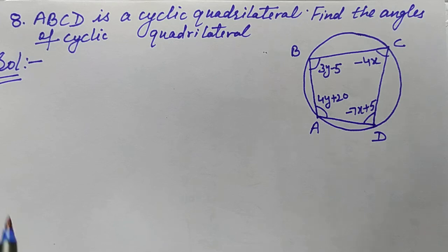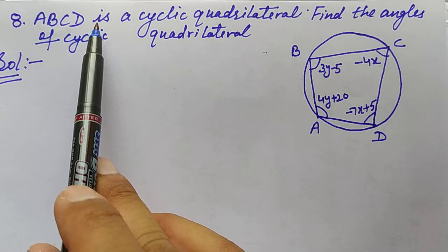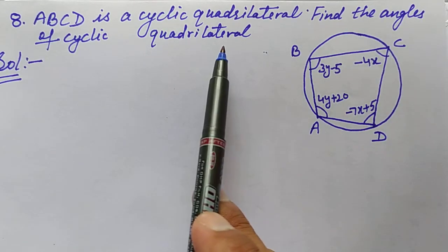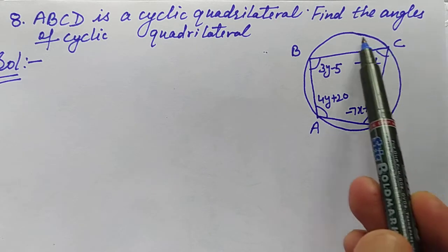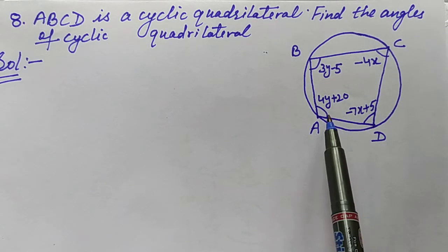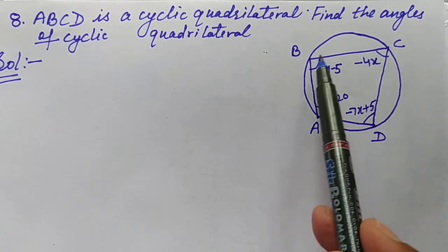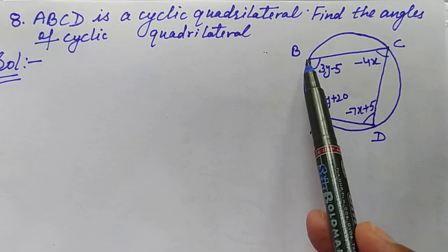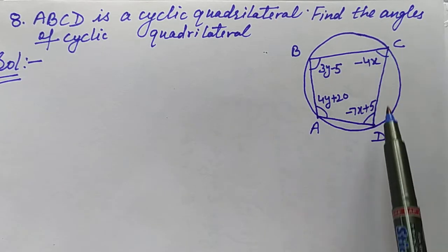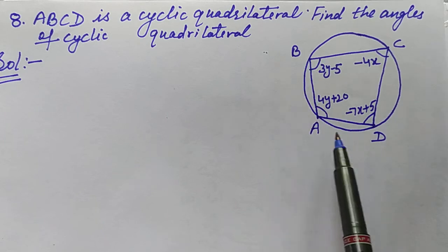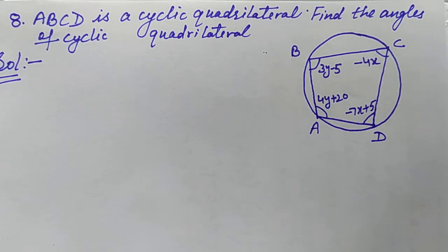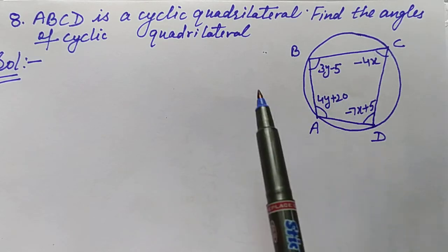Let's solve this question. ABCD is a cyclic quadrilateral — find the angles of the cyclic quadrilateral. A cyclic quadrilateral is one in which all four vertices lie on a circle. So in quadrilateral ABCD, vertex A, vertex B, vertex C, and vertex D all lie on the circle, and it is therefore called a cyclic quadrilateral.